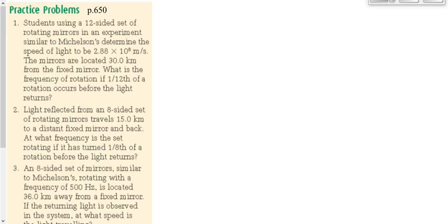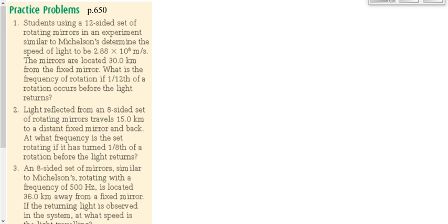I'm going to give you three questions to work on. One more word of caution: in question number one and question number two, you're looking for frequency. You need to know the speed of light if you're solving for frequency. If you're not given an experimental value, assume the accepted value, which is 3 × 10⁸. If you're solving for frequency, assume the value on your data sheet — 3 × 10⁸. Let's get moving on these three questions.